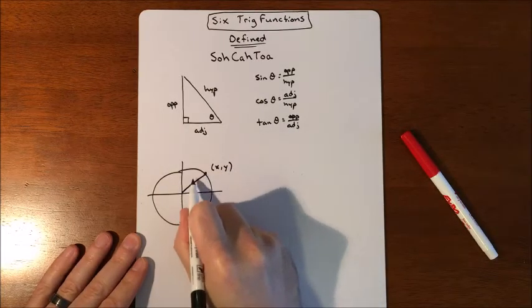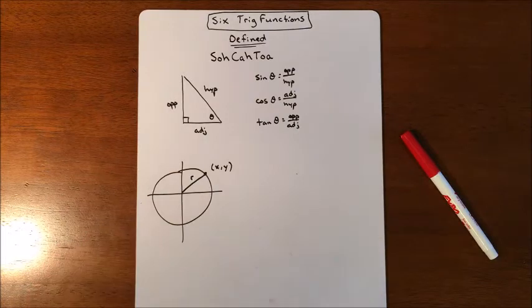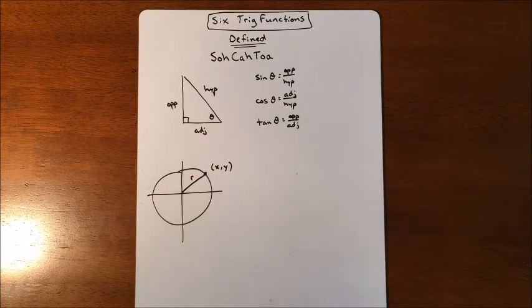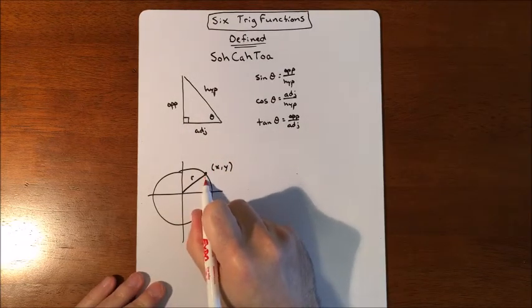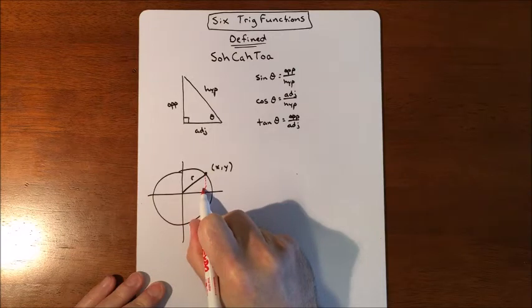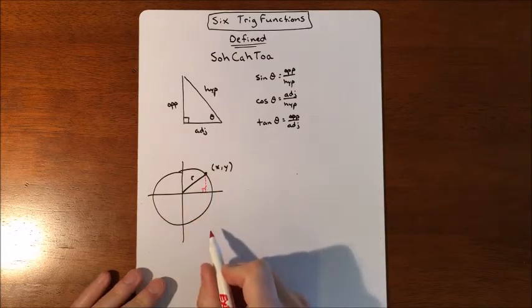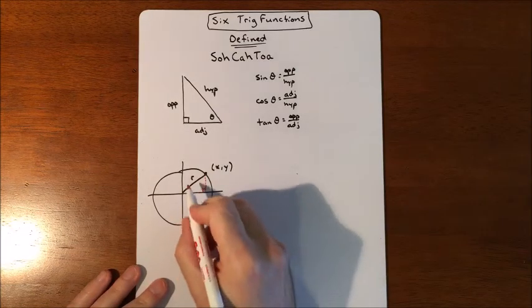And that circle has a radius of we don't know. So then from here, we're going to figure out how do we create sine, cosine, and tangent from this? Well, we can drop down a perpendicular, make a right triangle out of it. And then now we have a right triangle.